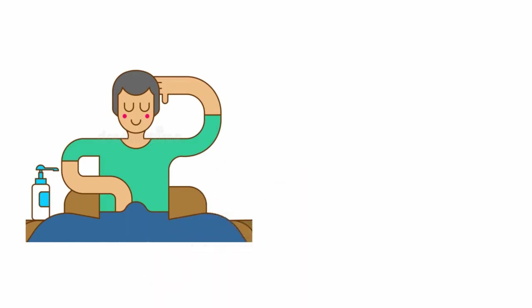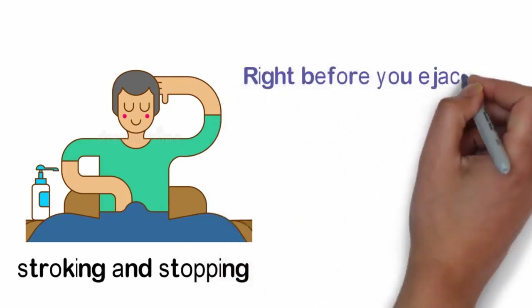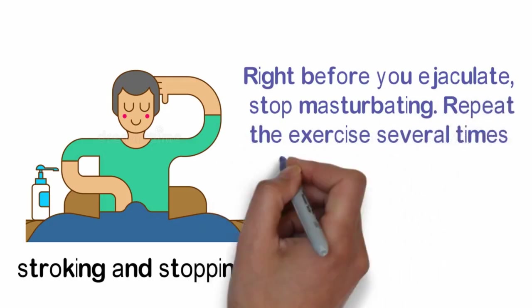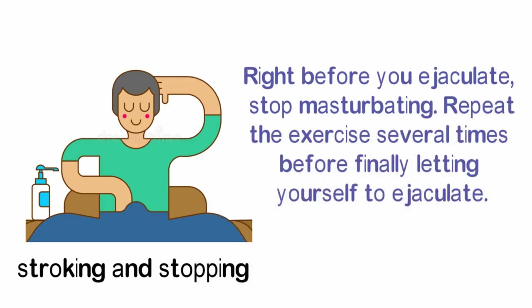What is the right way to masturbate? One of the famous methods is by stroking and stopping. This is where you stroke and masturbate until you experience the sexual sensation and pleasure that will eventually lead to ejaculation. Right before you ejaculate, stop masturbating. Repeat the exercise several times before finally letting yourself ejaculate.